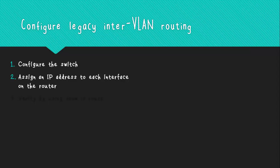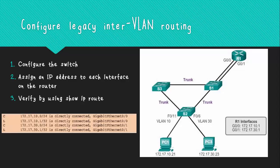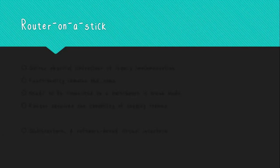Once each interface has an IP address configured, the router can perform InterVLAN routing. You can verify this process by issuing the 'show ip route' command from privileged exec mode and reviewing the network shown. In the image, you can see that two VLANs were created and are directly connected to two different interfaces.